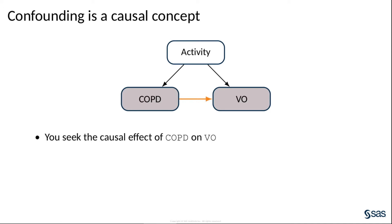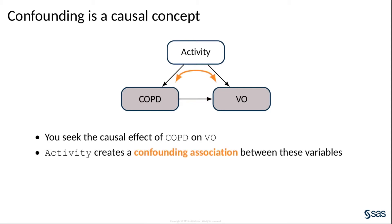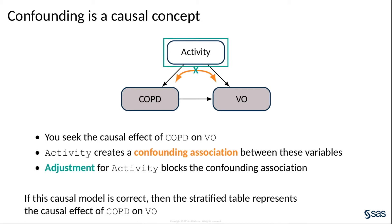In this example, you are interested in estimating the causal association between COPD and exercise capacity, but it might be the case that activity creates confounding association between the quantities of interest. For example, high activity levels might make it less likely that someone is diagnosed with COPD, and high activity levels might also cause an increase in VO2max. If this is really the case, then adjustment — in this case via stratification — for activity blocks the confounding association. Under these causal assumptions, the causal effect of interest is estimated by the stratified table.